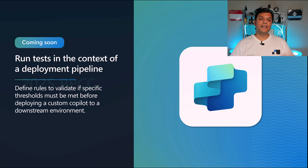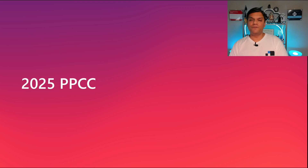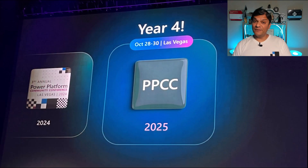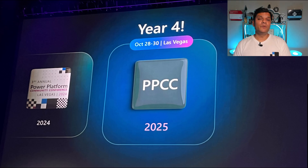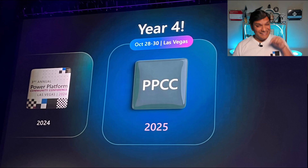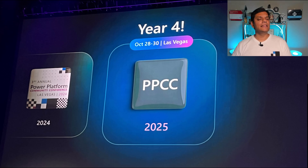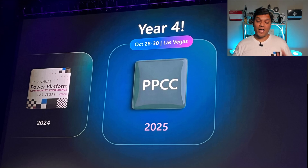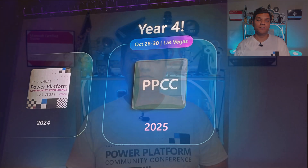Finally, the announcement of the 2025 Power Platform Community Conference. Year number four of this conference is going to be back at the same location at the MGM Grand in Las Vegas. The dates have changed a little bit — this year it was in September, but next year it's going to be in October, at the end of October. Same place, same location, just the date has slightly changed, and I personally look forward to attending.